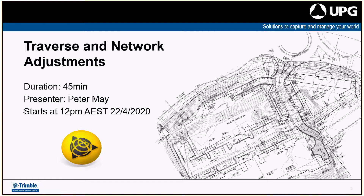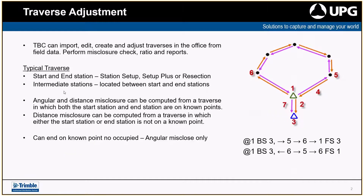The traverse adjustments — TBC can import the data, edit the data, and create and adjust traverses in the office software. It will give you an adjustment report at the end, telling you your positional misclose, your angular misclose, and all the other ratios. That can then be saved as part of your QA process — for instance here in New South Wales, we have to keep those records to show that we're completing surveys to a certain tolerance and ratio.